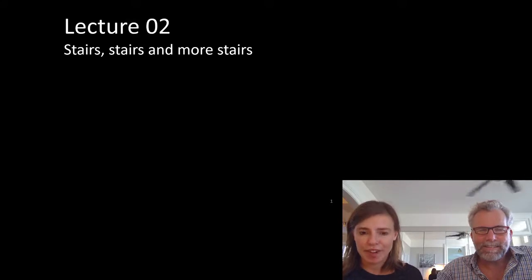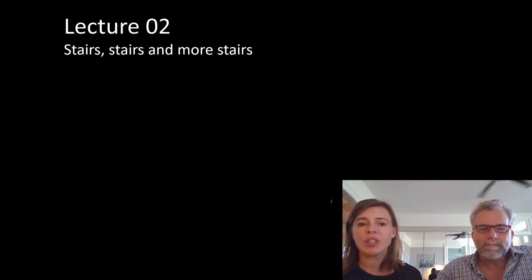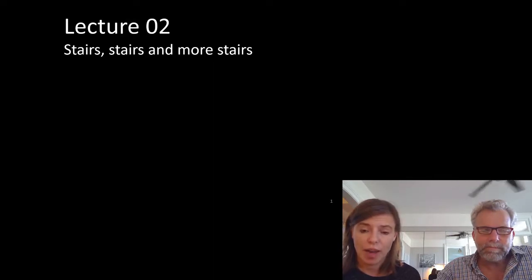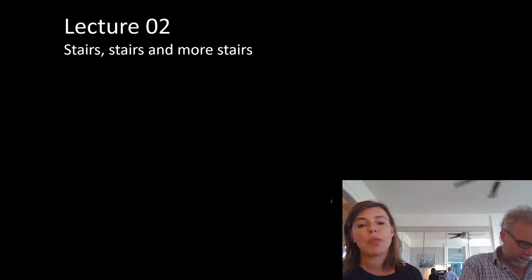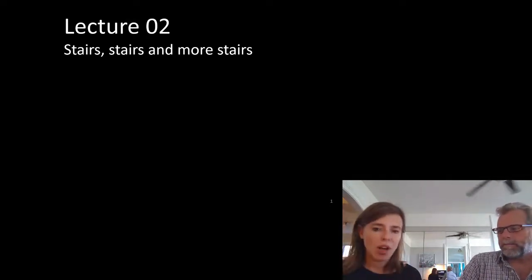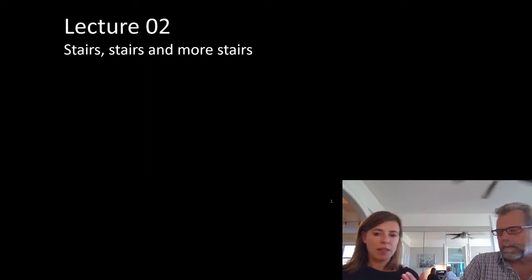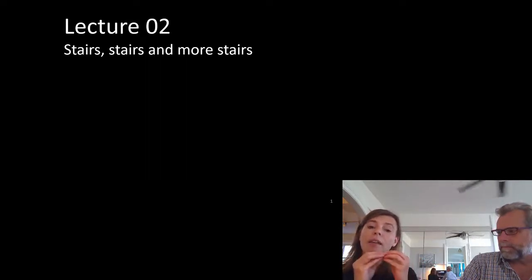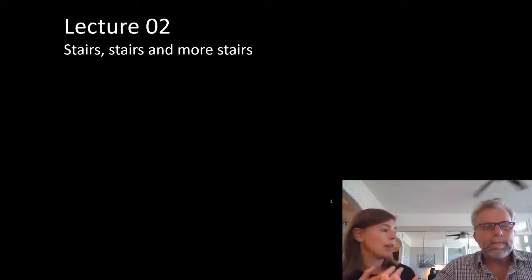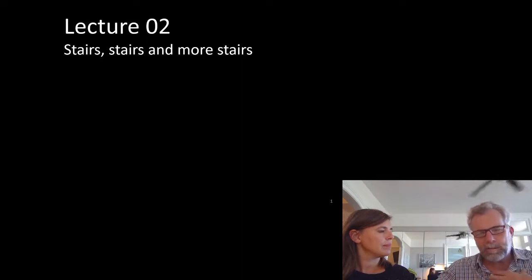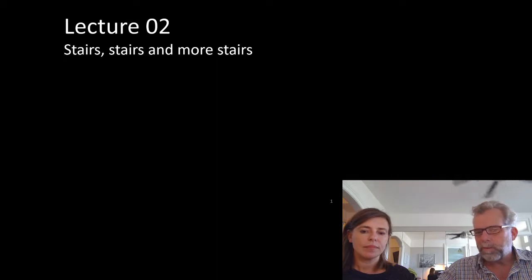We're going to talk about stairs today. I'll go through what the code tells you from an engineering point of view. Most stair information actually comes from the architectural component of the code — Part 3 — while I'm focusing on Part 4. We'll loosely talk about Part 3, trying to tie in where the architect and engineer overlap on these feature elements.